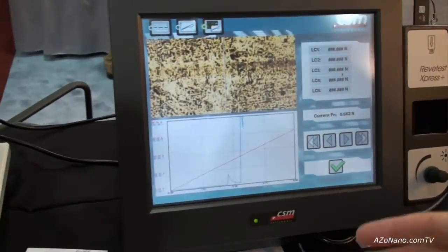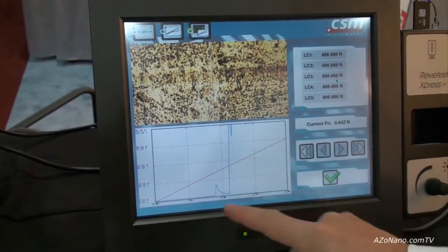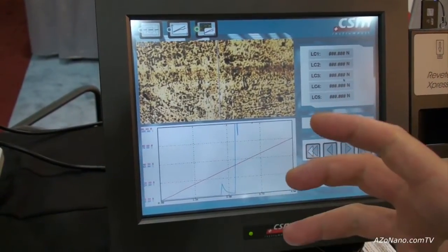So as you can see we're now looking at the data set. This is acoustic emission and we see a jump in the acoustic emission where we had brittle failure of the coating.